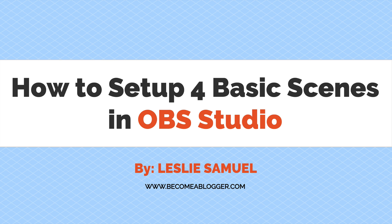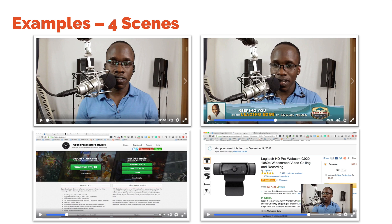I spoke about this in the introduction, but I want to recap. These are the four scenes we're going to set up. At the top left, a scene with just the webcam. At the top right, the webcam and an image overlay with a lower third. At the bottom left, just the browser window. And at the bottom right, the browser window and a webcam in the lower right corner. So let's jump into OBS right now and make this happen.